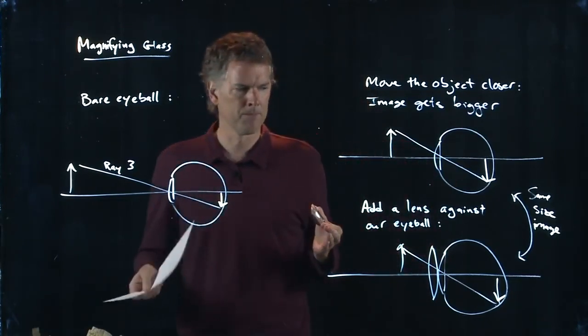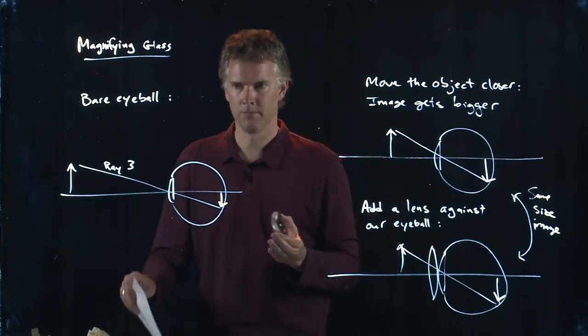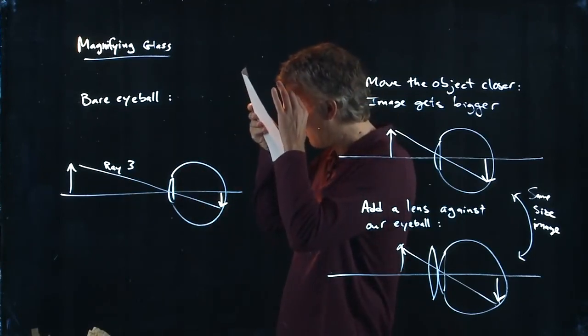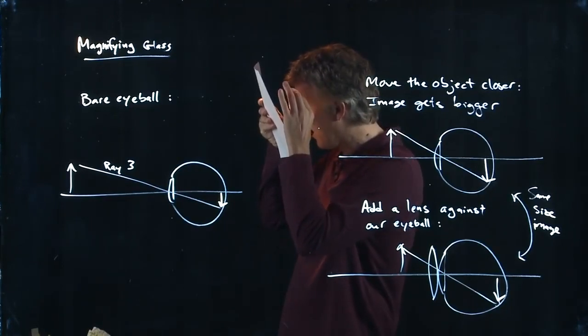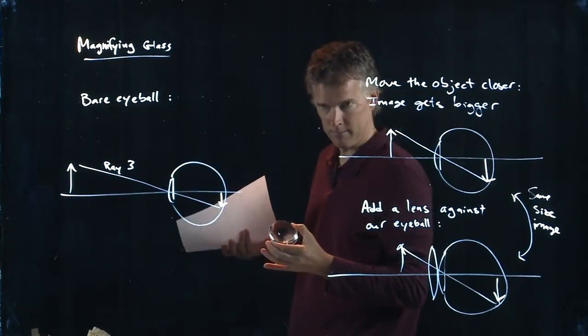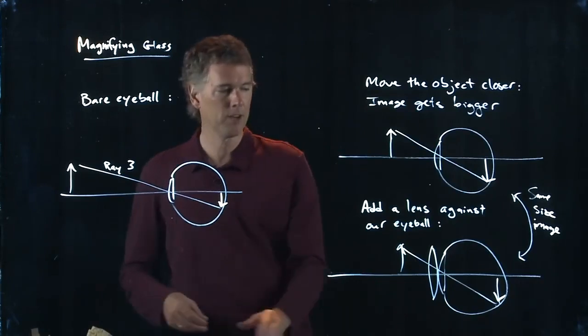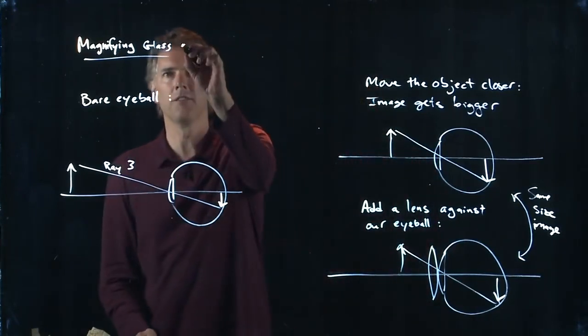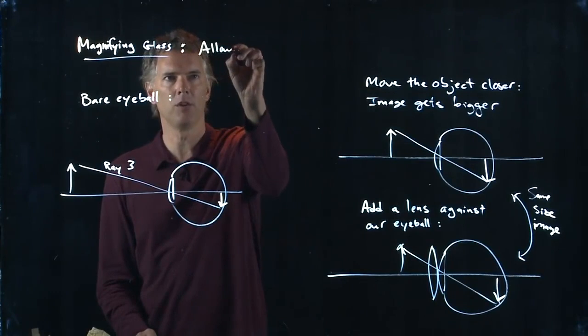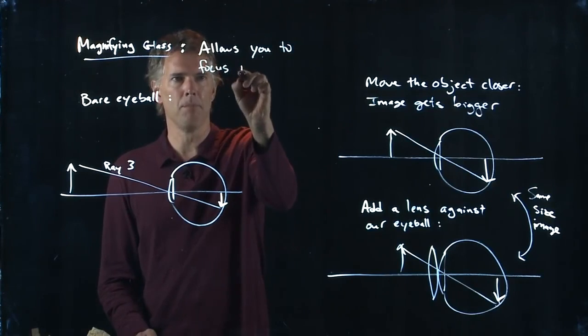So what is the purpose of this magnifying glass? Well, it's this: if I put it here, I have a nice big image of my text. If I take it away, I have the same size image of the text, but I can't read it because I can't focus on it that close. This is the whole point of the magnifying glass when used in this manner, right up against your eyeball. It simply allows you to focus much closer.